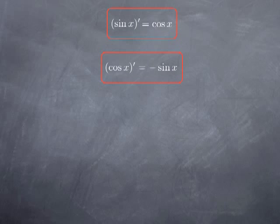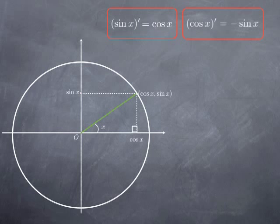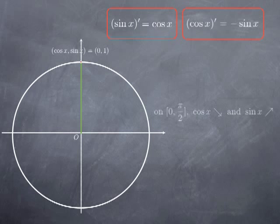A similar calculation would give us that the derivative of cos x is negative sin x. So you see that if we differentiate sine, we obtain cosine; if we differentiate cosine, we obtain sine up to possibly a positive or negative sign. So how to remember which one has a negative sign in front? Well, if you look at the unit circle and concentrate on the first quadrant, in which case both sin and cosine are positive: for an angle of 0, we have cosine of 1 and sine of 0. As x increases from 0 to pi over 2, the cosine decreases and the sine increases.